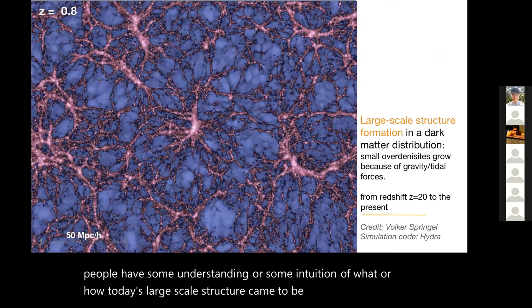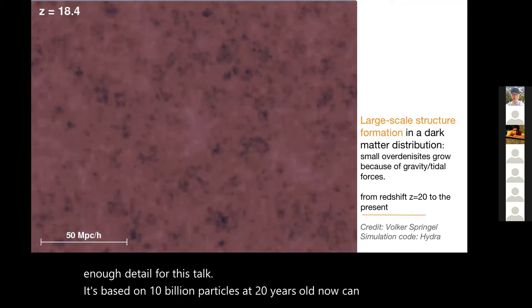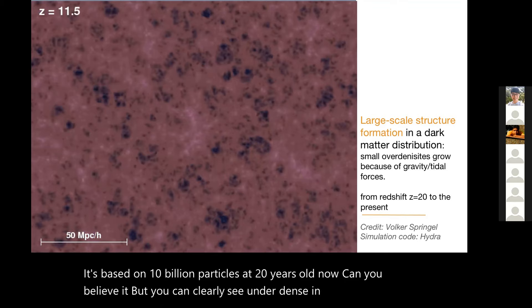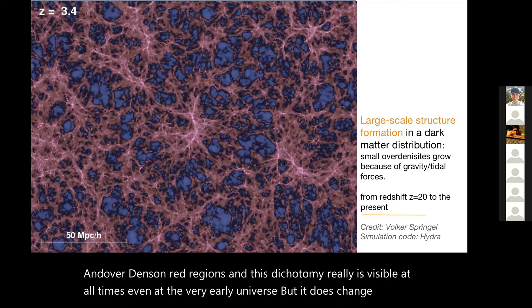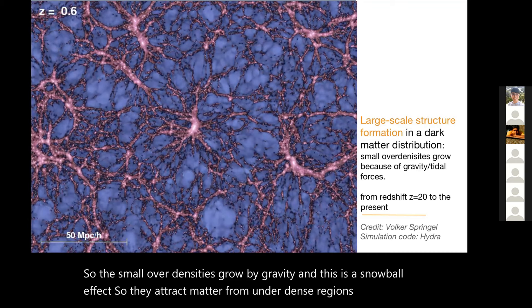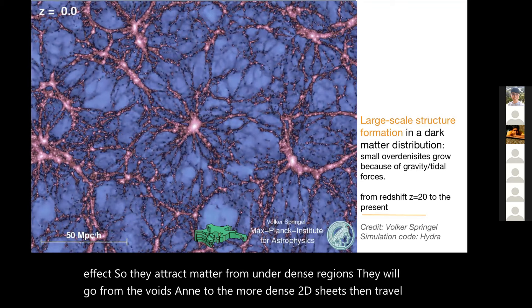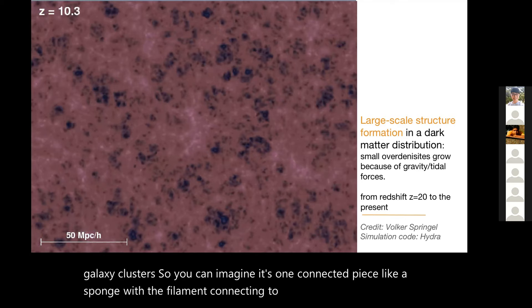This is a famous simulation that summarizes our understanding. It's based on 10 billion particles, 20 years old now - can you believe it? You can clearly see underdense in blue regions and overdense in red regions. This dichotomy is visible at all times, even in the very early universe, but it does change over time. Small overdensities grow by gravity in a snowball effect. They attract matter from underdense regions. Matter will go from the voids to the more dense 2D sheets, then travel along these 1D filaments and then come to the knots - the galaxy clusters. You can imagine it's one connected piece like a sponge with the filaments connecting to the clusters and the voids like tunnels going through this.